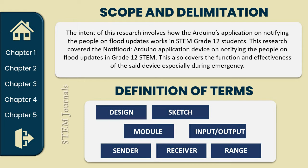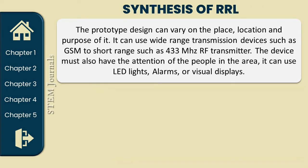This is the definition of terms. The following terms are used conceptually and operationally in our research paper. For the people in the area, the device can use LED lights, alarms, or a visual display. Here in the RRL, our prototype focuses on places that are prone to flooding and places near rivers. When rain is heavy, our prototype can be used as an alternative device to give warnings or for people to know when to evacuate. We use RF modules on our devices to transmit messages, and it has an alarming system so that when water rises, it will make sounds.